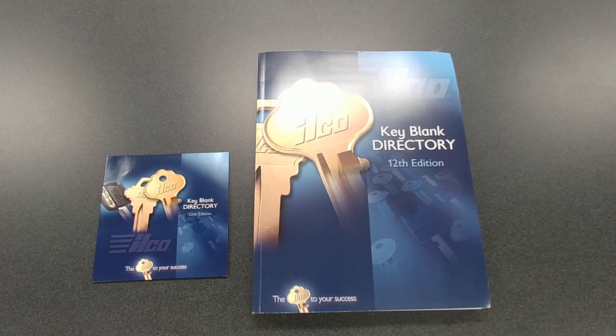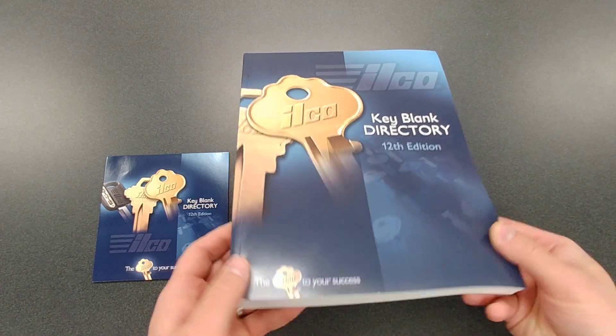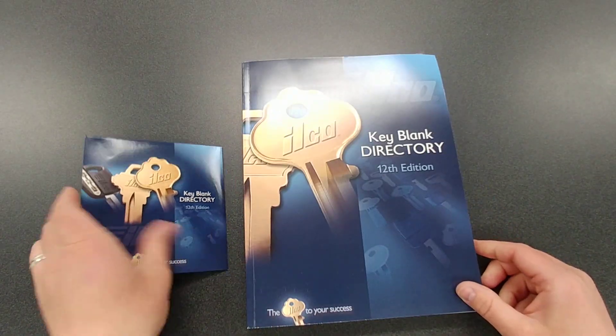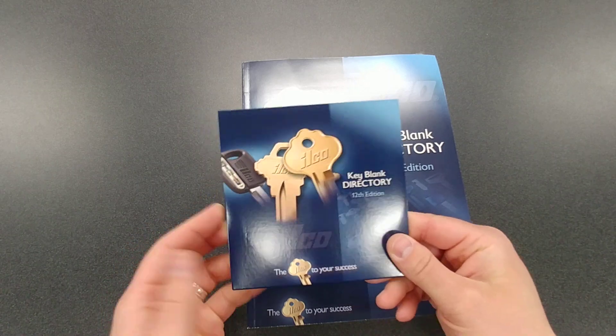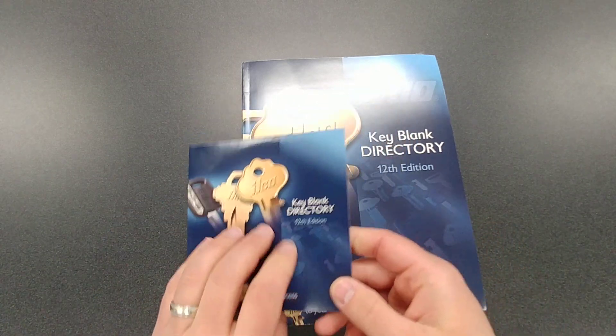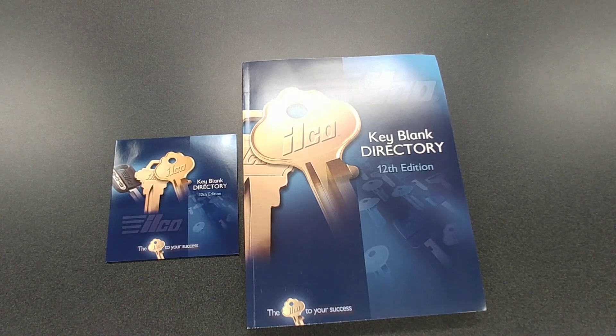Now, you can get this information in three forms, right? You can get it in this print version right here. You can get it in a CD-ROM version, which is going to be just a PDF document. Or you can go to Ilco's website and you can actually download all the sections for free.